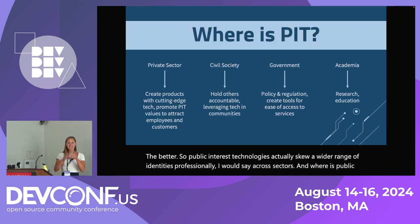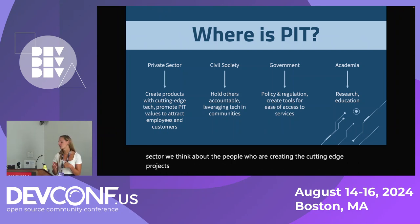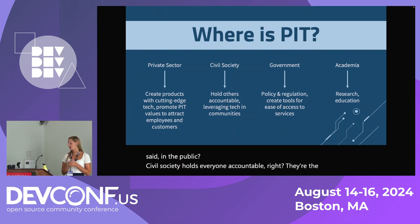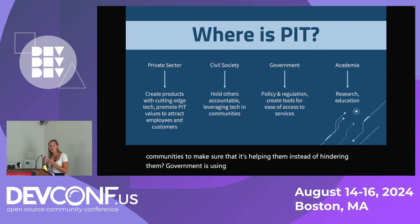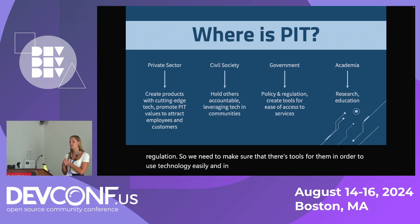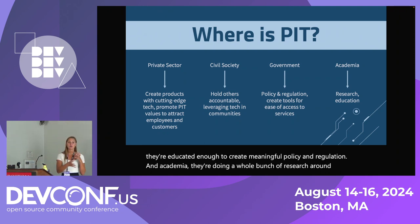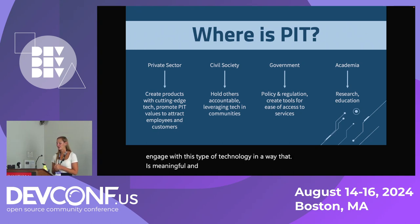Where is Public Interest Tech? It's actually everywhere. In the private sector, people are creating cutting-edge projects — private sector can move a little bit faster and attracts employees and customers, so how can we use PIT values to make sure those products are used in the public interest? Civil society holds everyone accountable — they're consuming these projects and leveraging tech in their communities. Government is using it and also in charge of policy and regulation, so they need tools to use technology easily and be educated enough to create meaningful policy. In academia, they're doing research around Public Interest Tech and educating the next workforce to engage with this technology in a meaningful and impactful way.